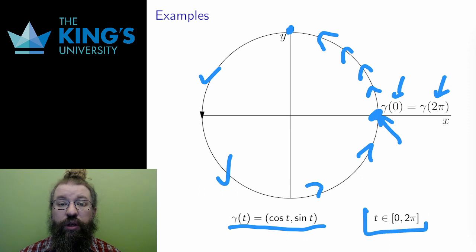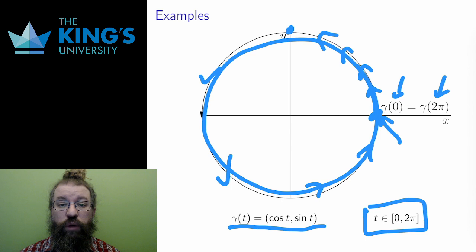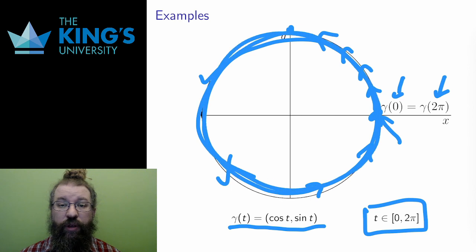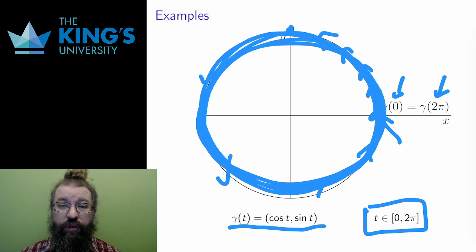If the domain of the curve is just t in the interval [0, 2π], then it would stop here. However, if the domain were to continue, the circle would just trace over itself again and again. A parametric curve can do this. It can self-intersect, and even entirely trace over itself.